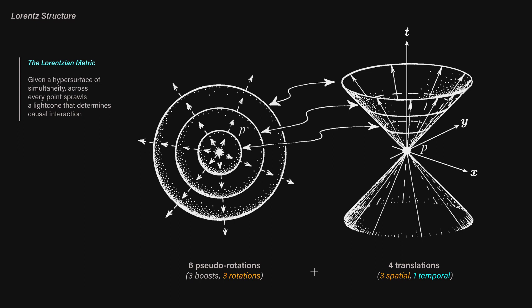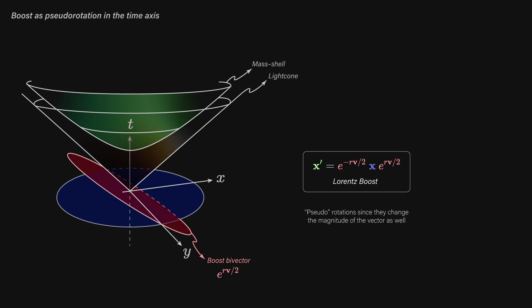And we can also perform Lorentz boosts. A Lorentz boost is just a hyperbolic rotation around the time axis as well, and so is given by a set of three hyperbolic bivectors.